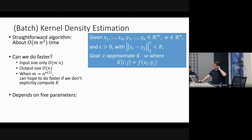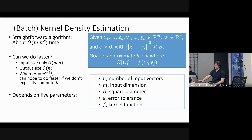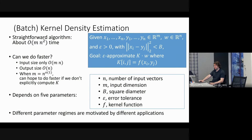There are a lot of parameters to this problem: n (number of input vectors), m (input dimension), B (the squared diameter), epsilon (the tolerance for error), and f (the kernel function). Depending on these five parameters, it can make a big difference whether or not it's possible to design a faster algorithm.